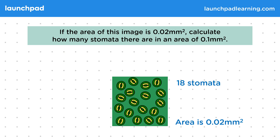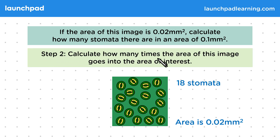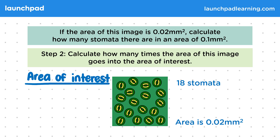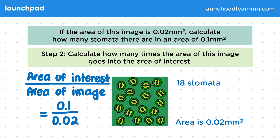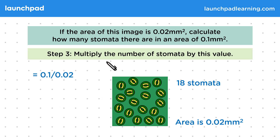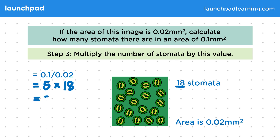Let's note this down. Step two: calculate how many times the area of this image goes into the area of interest. In this question, the area of interest is 0.1 mm². We divide this by the area of the image, which is 0.02 mm² — therefore this would be the calculation. Step three: multiply the number of stomata by this value. We have 18 stomata, and 0.1 divided by 0.02 is 5, so we do 5 multiplied by 18. This gives a total of 90 stomata per 0.1 mm².